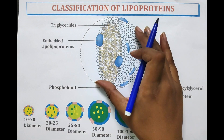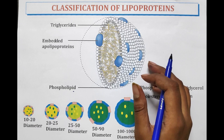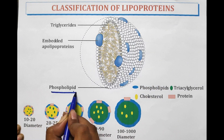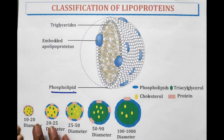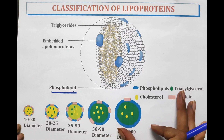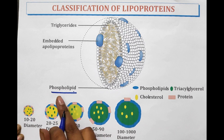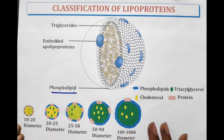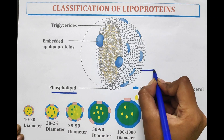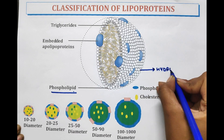This is the structure of lipoprotein which contains phospholipid. Phospholipid is the class of lipids that are the major component of a cell membrane. They can form lipid bilayers because they are amphiphilic in nature. Amphiphilic means hydrophilic as well as hydrophobic nature. This phospholipid contains a head and a tail — this head is hydrophilic.